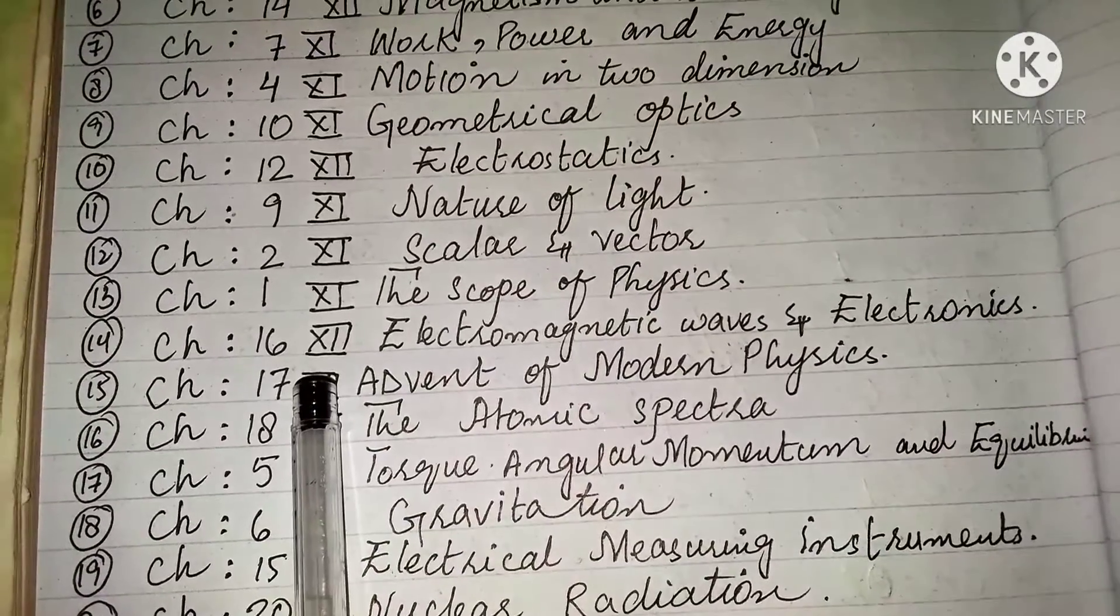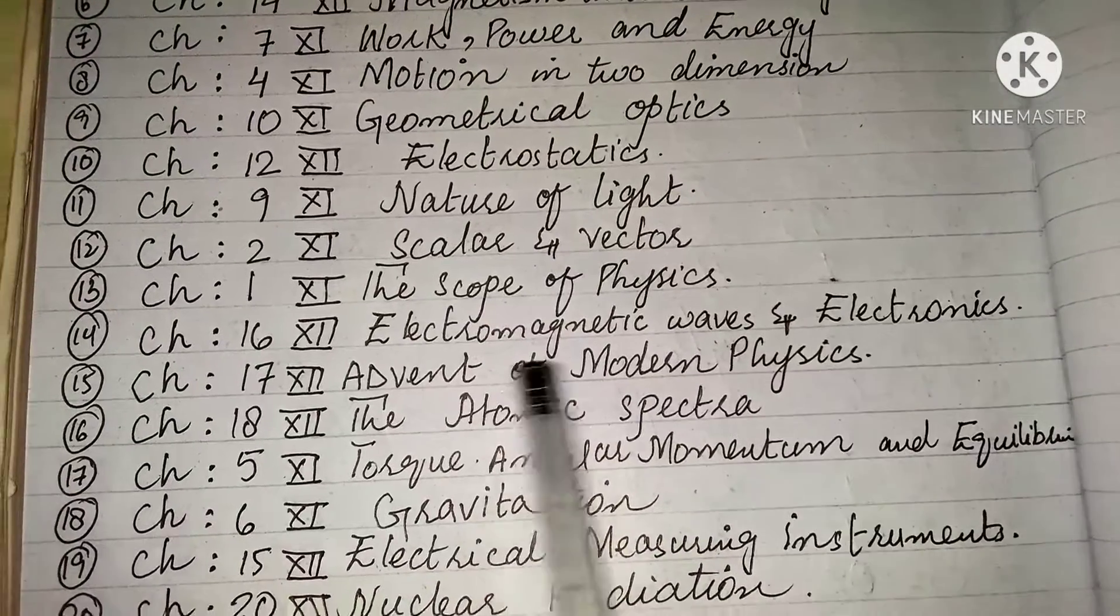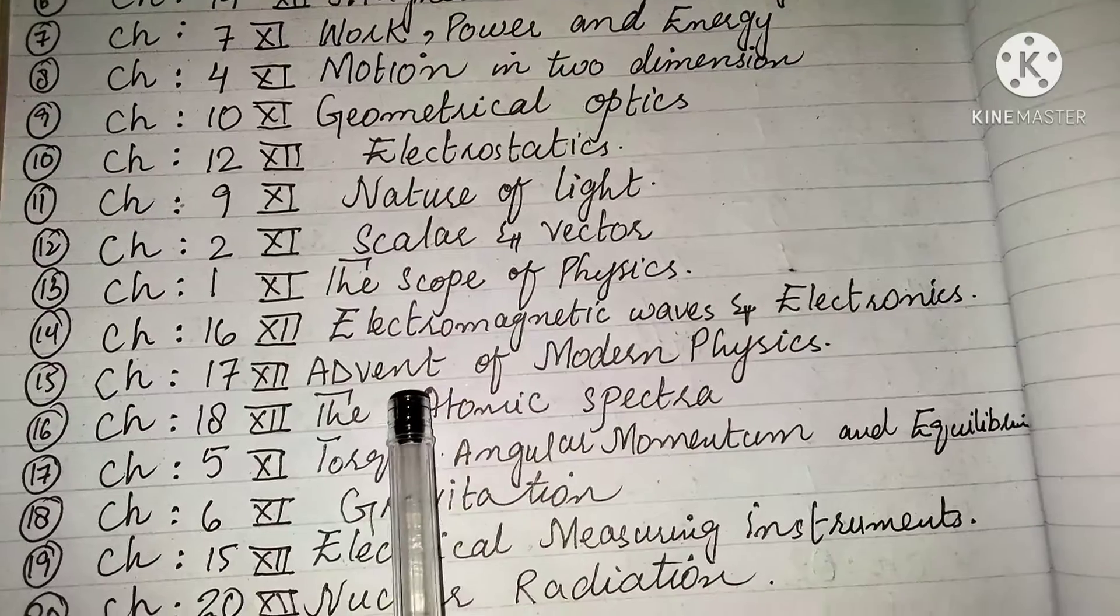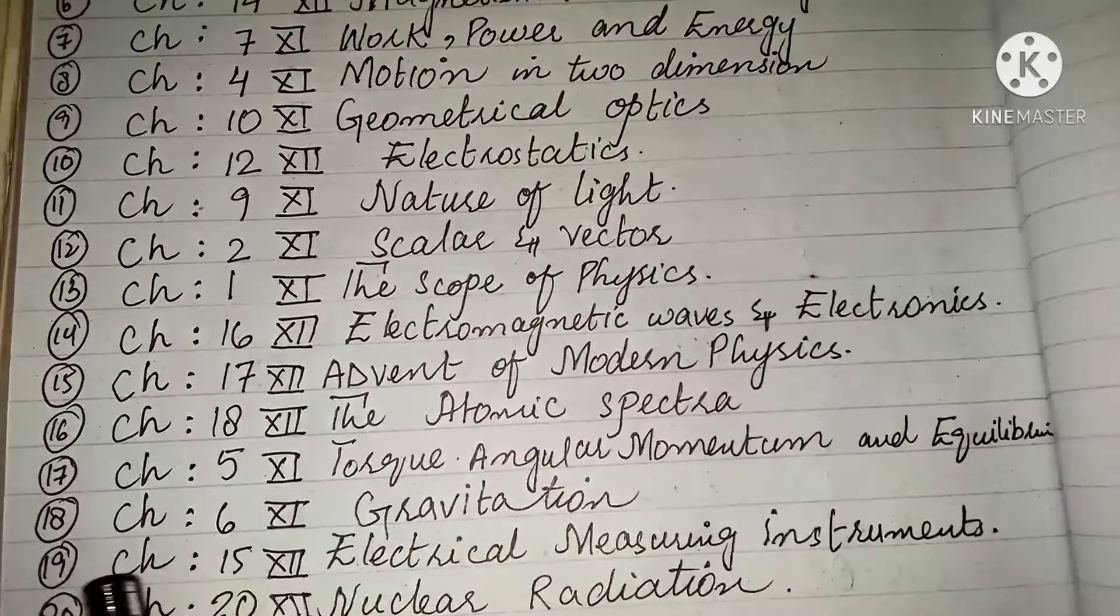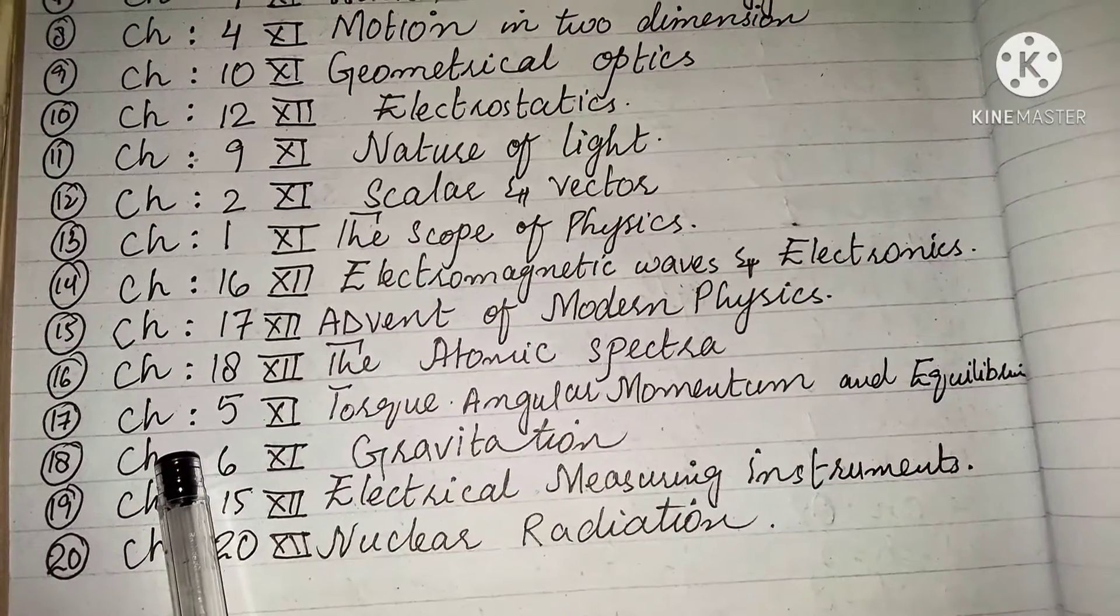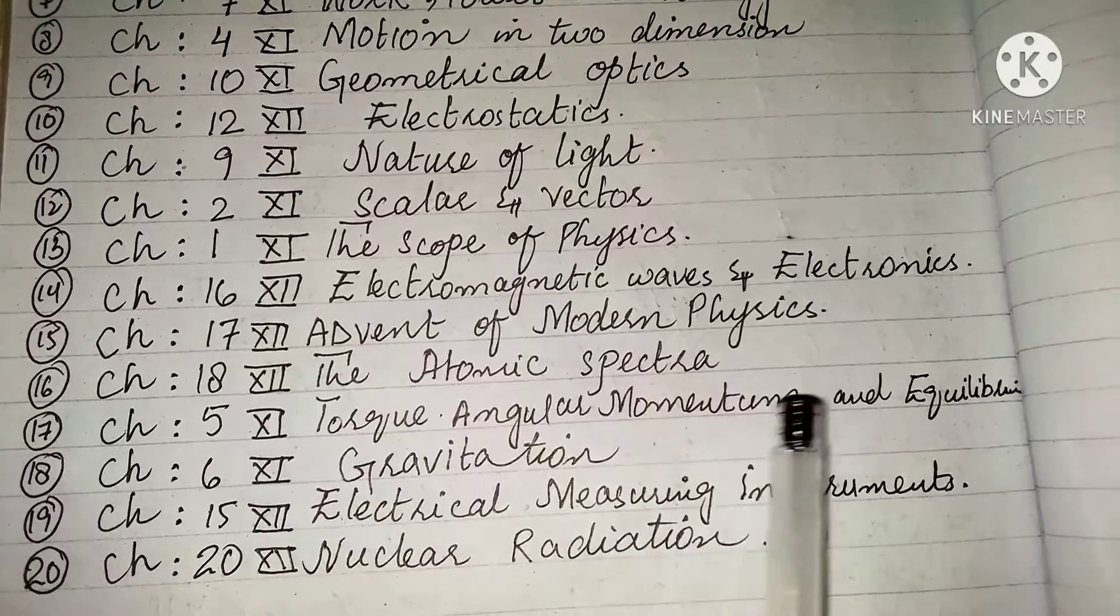Chapter 2, first year, scalar and vector. Chapter 1, first year, the scope of physics. Chapter 16, inter, electromagnetic waves and electronics. Chapter 17, inter, advent of modern physics.